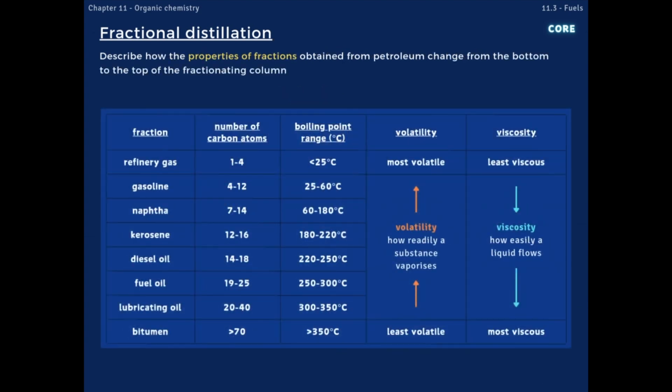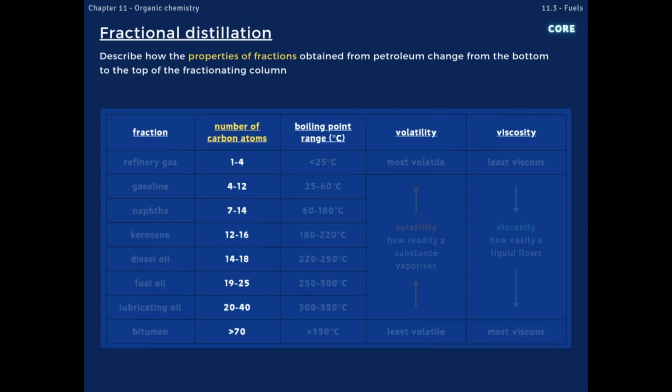Now, the properties of the fractions obtained from petroleum change from the bottom to the top of the fractionating column. Those that collect nearer the top contain shorter hydrocarbon chains held together by weaker intermolecular forces of attraction. This means that, moving up the column, fractions are more volatile, less viscous, and have lower boiling points. Volatility refers to the tendency of a substance to vaporise, and viscosity to the thickness or ease with which a liquid flows.